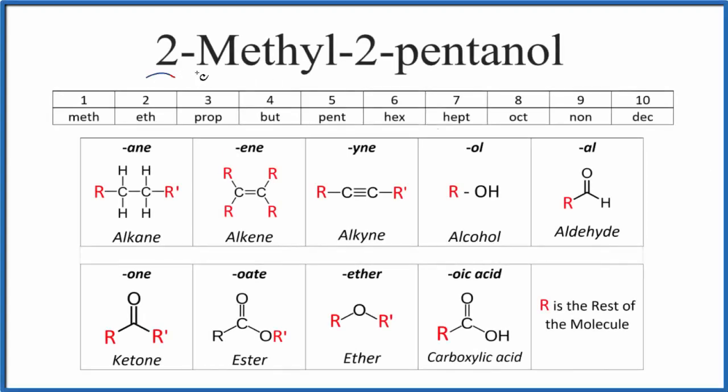Let's write the structural formula for 2-methyl-2-pentanol. This is also called 2-methyl-pentan-2-ol. They're the same structure. First off, we note that we have OL at the end. That OL tells us we have an alcohol. So we'll have a carbon bonded to an OH group. That's our alcohol.